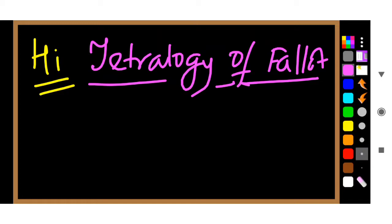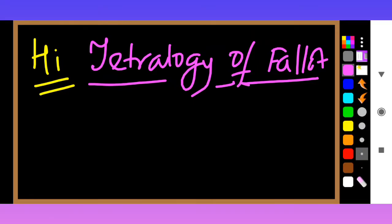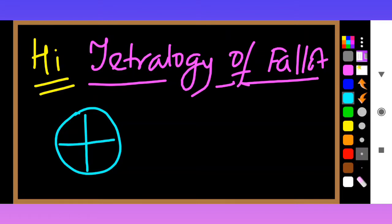Please ignore the background music — there is a marriage ceremony going on here in our para. So, what happens in Tetralogy of Fallot? Let me draw a heart. This heart has four chambers: the right atrium, right ventricle, left atrium, and left ventricle.